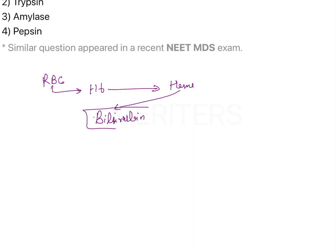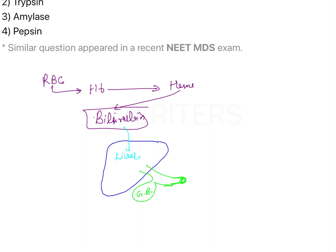This bilirubin is taken by the liver and through the bile it goes to the gallbladder. It will first concentrate in the gallbladder and then come to the intestine through the hepatopancreatic duct. So bilirubin goes inside the liver and through the liver it also goes to the intestine.